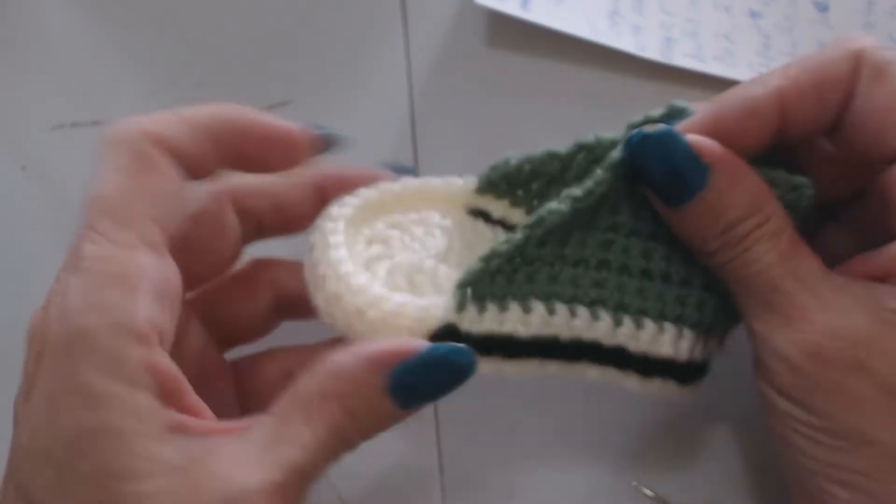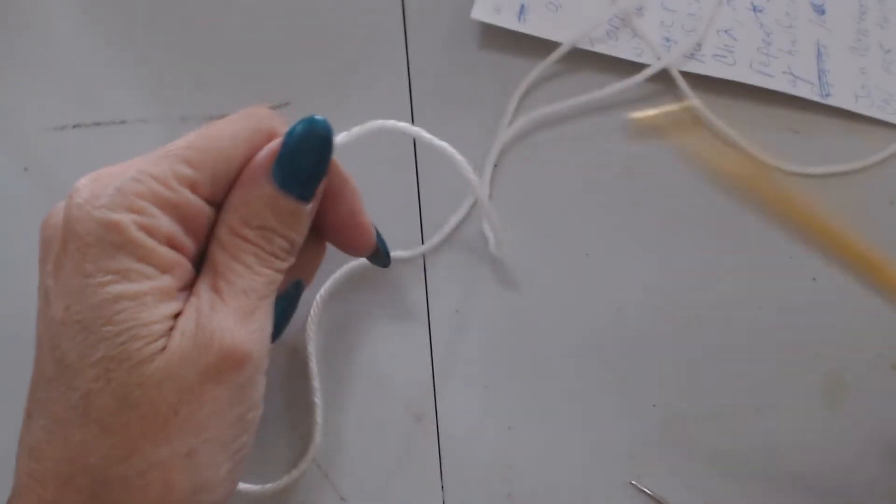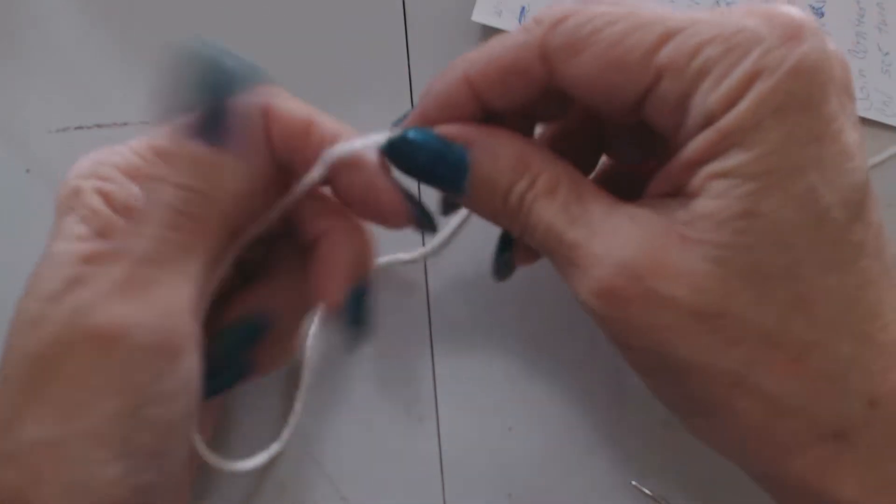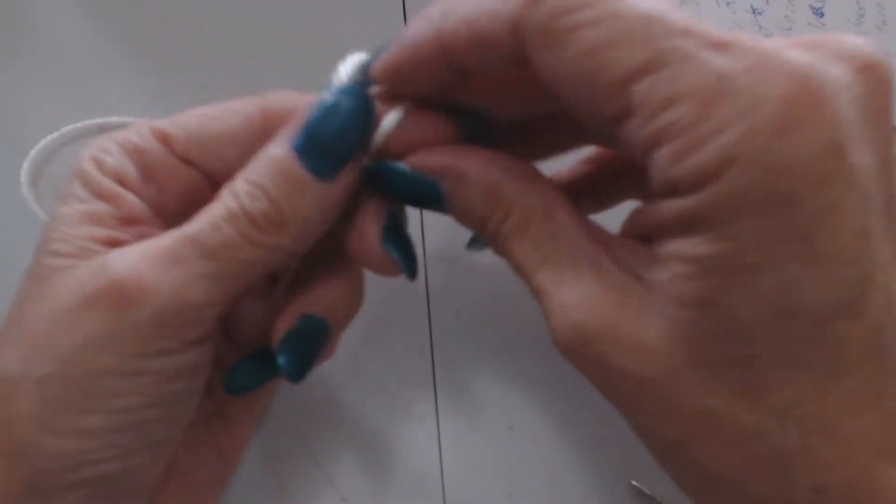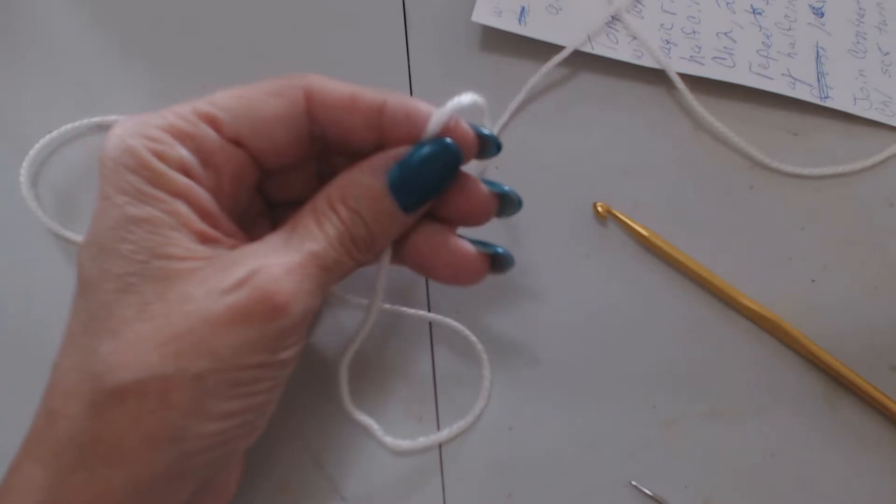Now we are going to do the toe of the shoe here. So I gotta get my white. For me, because of my tight crocheting, I stay with my G hook on this toe. And I do that because of my tight crocheting. So now what we need to do, if you're not a tight crocheter, then you can use your F hook.